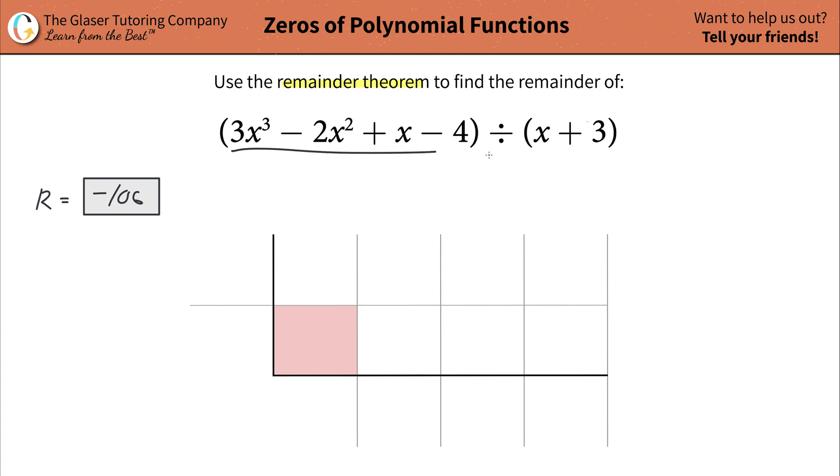So what we're going to do here is take our dividend and write in all the coefficients. You start with your x cubed term, the coefficient there, then you go x squared, x, and then your constant. So the coefficient of the x cubed is a three, coefficient of the x squared is a negative two, the coefficient of the x term is a one, and the constant is going to be a negative four.